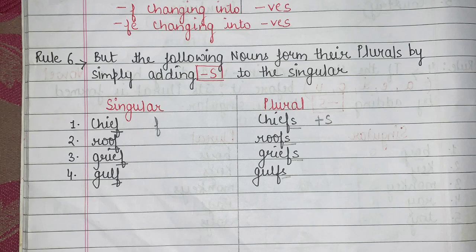So students, make sure that whenever you are studying nouns and you are particularly studying the number — in which you are studying singular and plural — you must understand these rules in order to avoid mistakes. These are some common things which make your grammar base very strong. So make sure that whenever you are learning grammar, you should know all these basic things about nouns, about tenses, about all the foundational things. Because if you build your base in these things, it will make understanding the language excellent and easy.